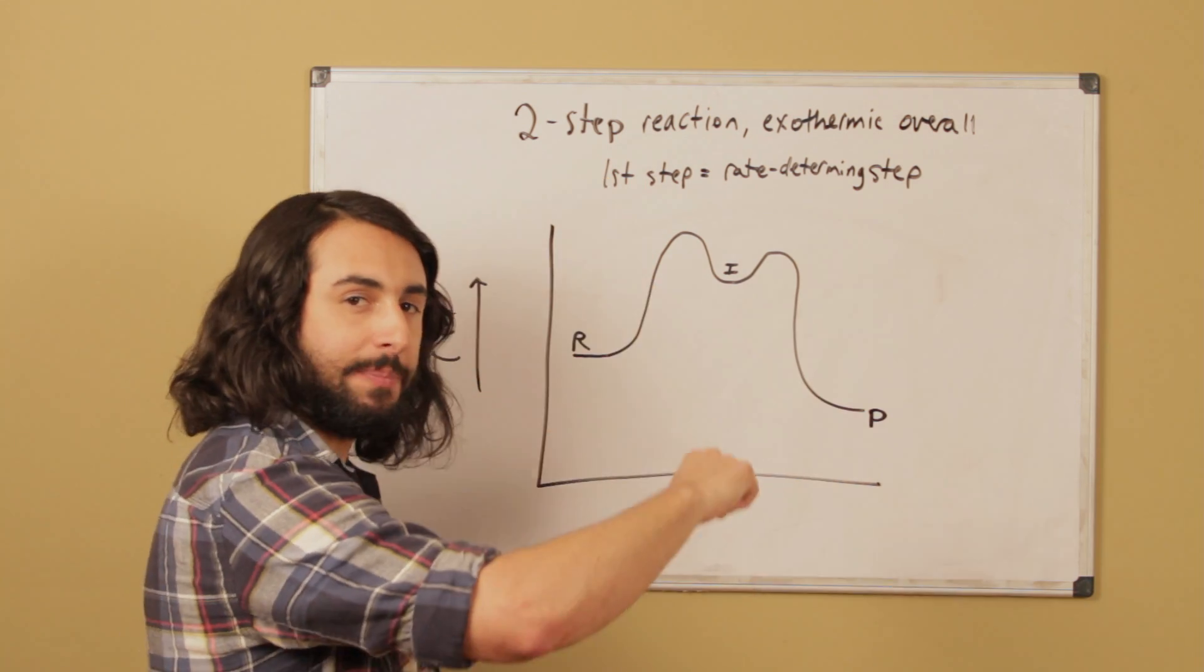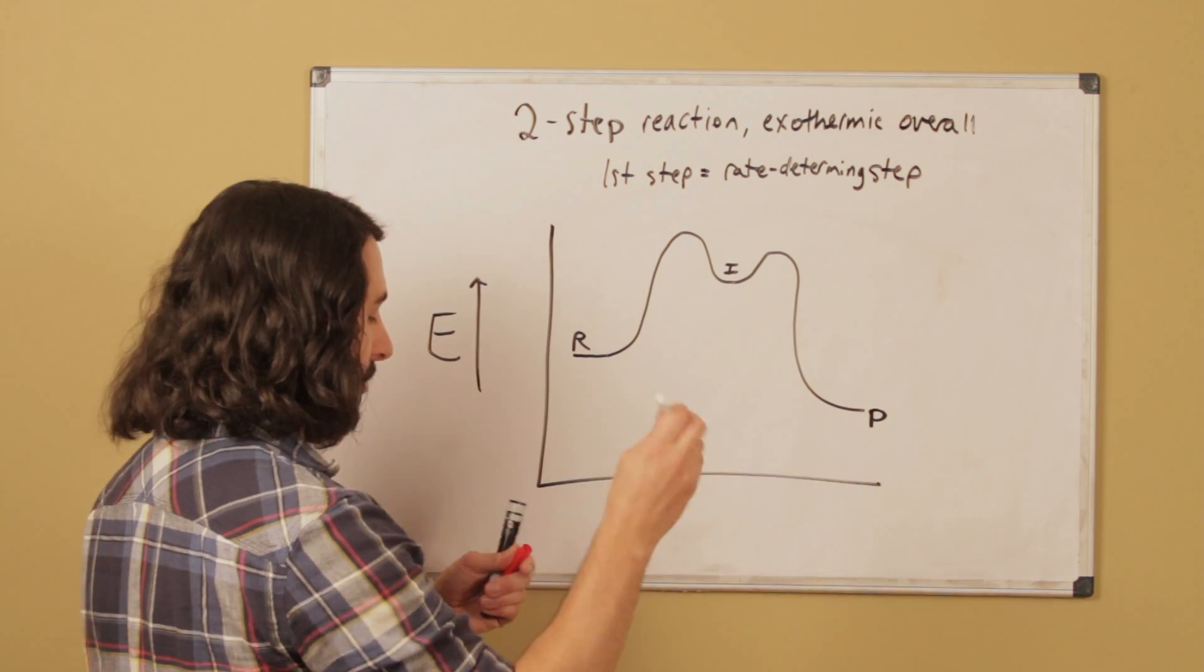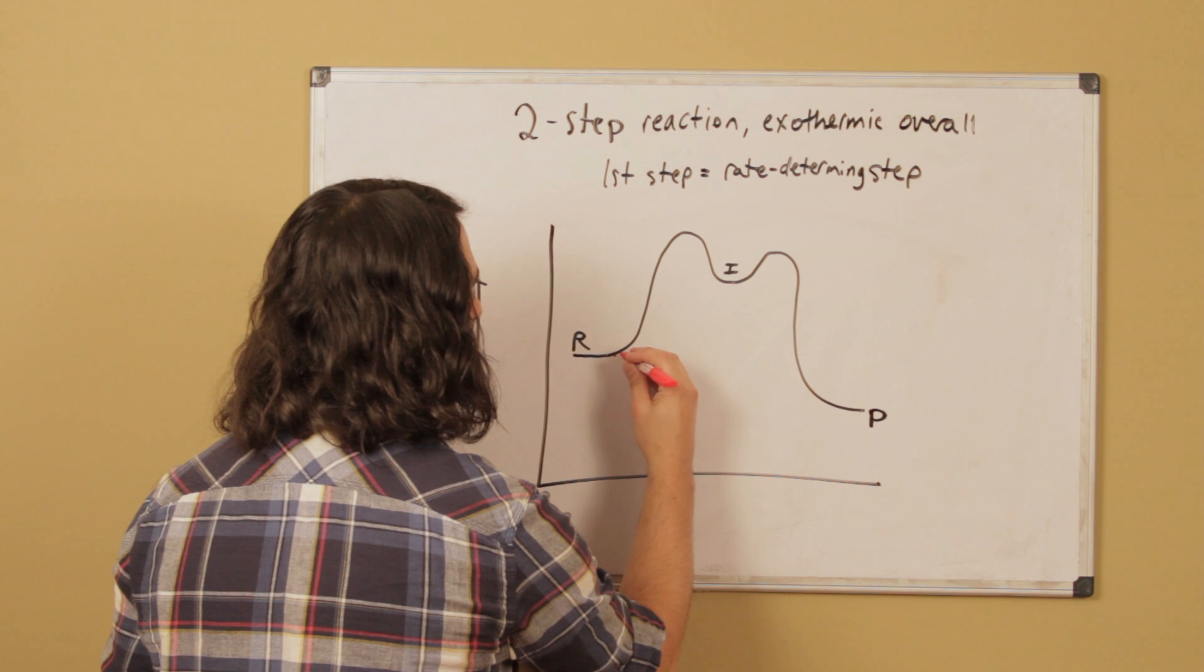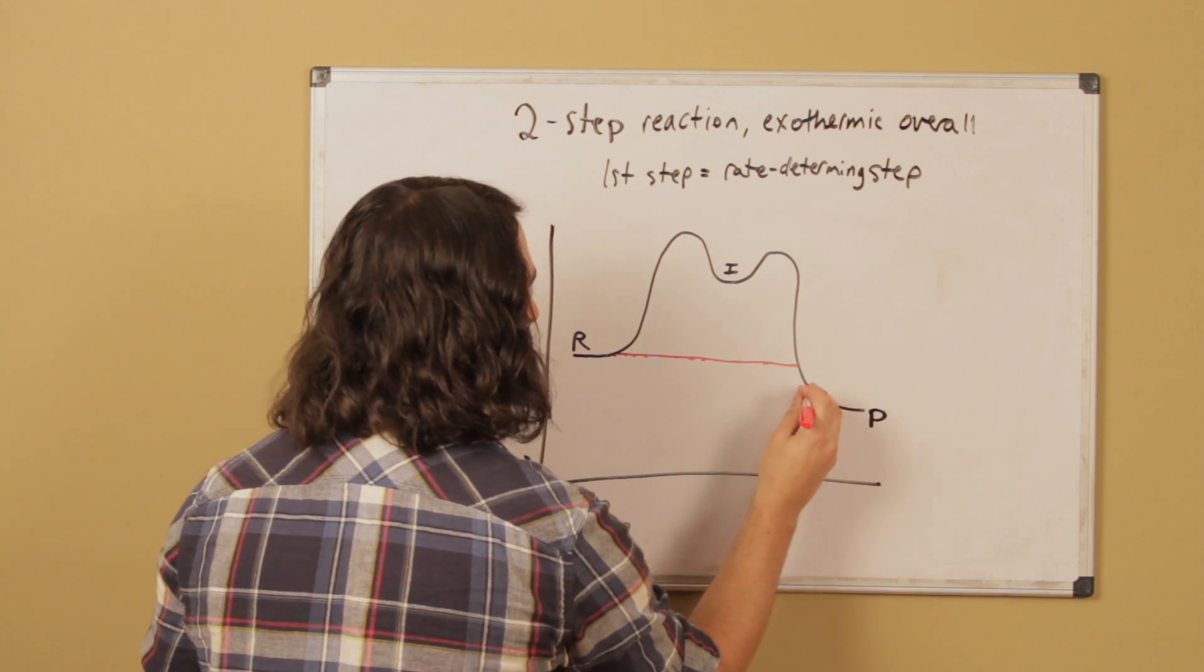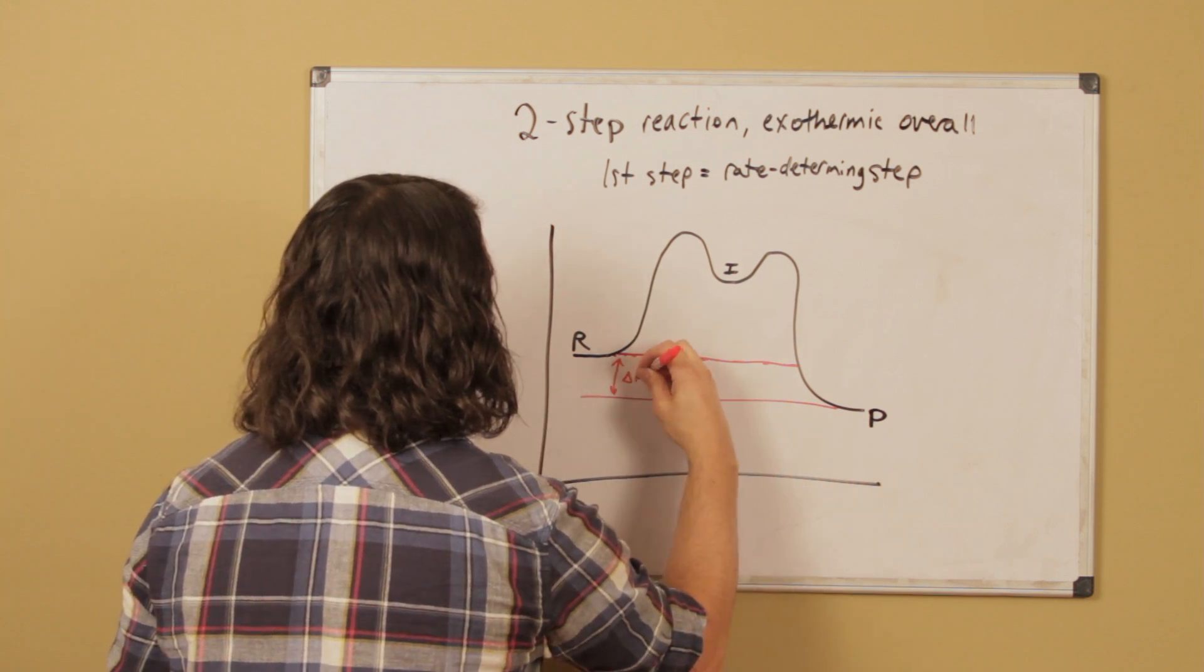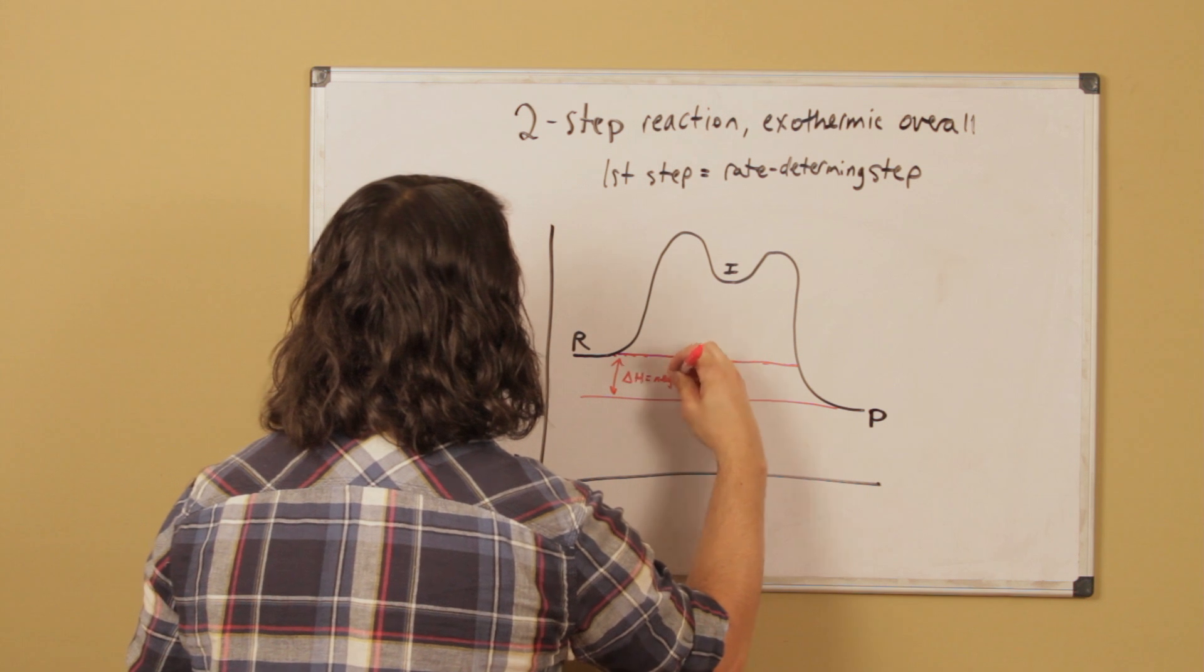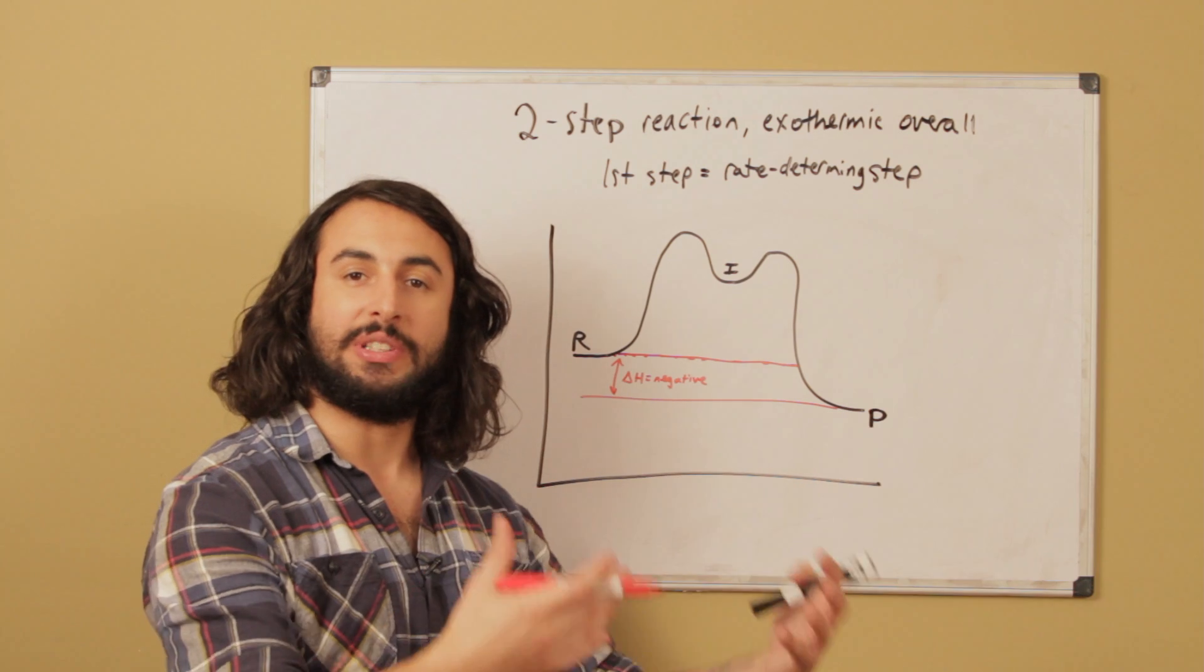This is two discrete steps, which means we need two slopes like that. First of all, we said it's exothermic, so that means the delta H must be negative. That means from reactants to products, it must release energy—it must go lower in energy.